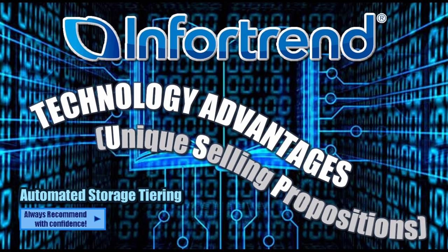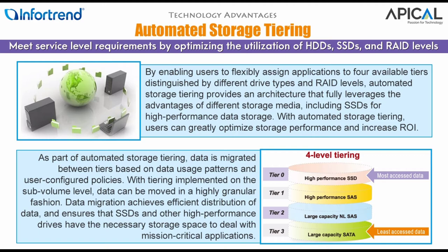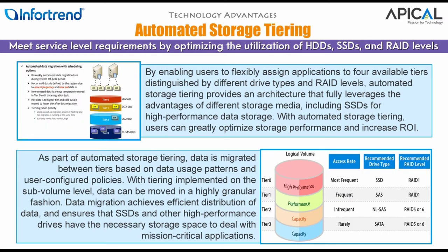Welcome to our presentation on Infotrend automated storage tiering. What is automated storage tiering? Users can meet service level requirements by optimizing the utilization of hard disk drives, SSDs, and RAID levels. Automated storage tiering provides an architecture that fully leverages the advantages of different storage media. Users are enabled to flexibly assign applications to four available tiers, distinguished by different drive types: solid state drives (SSD), serial attached SCSI (SAS), nearline SAS, and serial ATA (SATA) and RAID levels. SSDs are used for high performance data storage. With automated storage tiering, users can greatly optimize storage performance and increase return on investment (ROI).